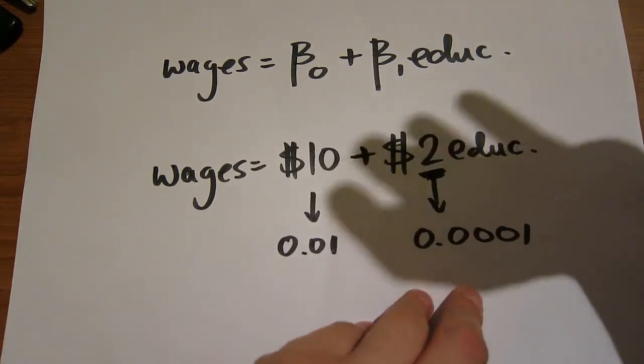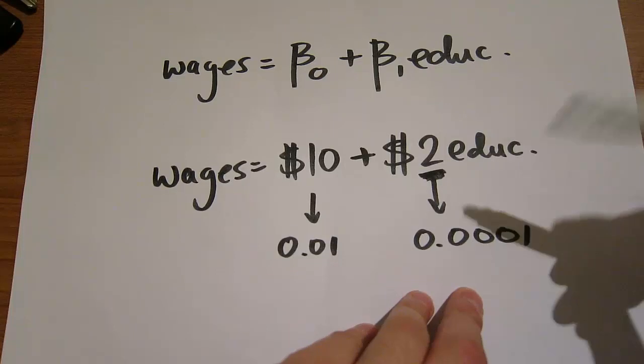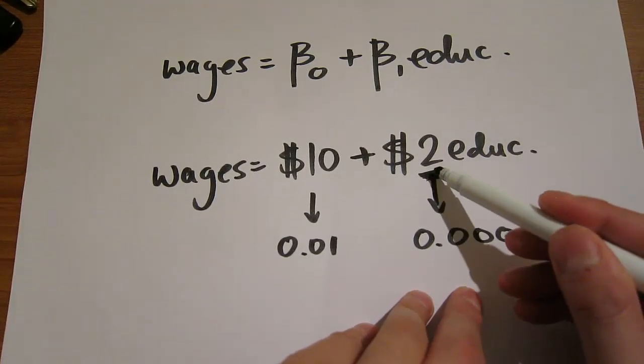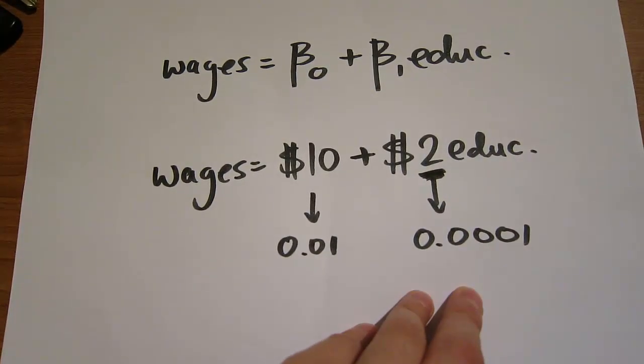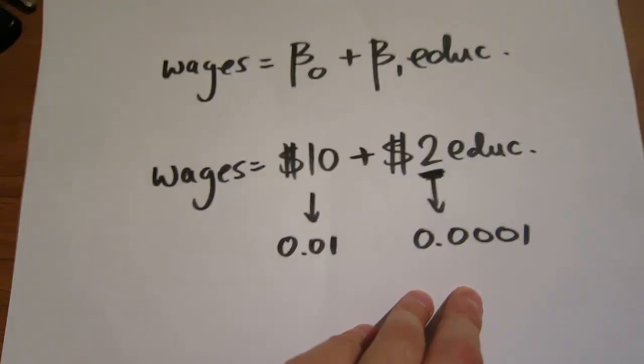What this means is that this number is not random. If we were to resample, we would always get a slope coefficient close to $2. That's what statistical significance means.